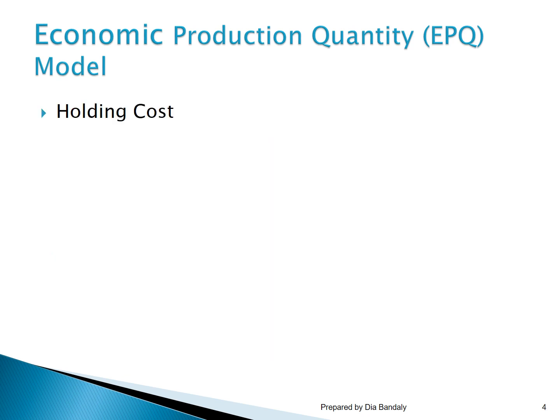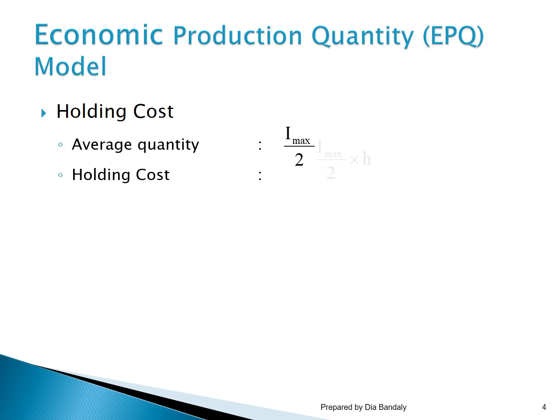The first cost is the holding cost. As in the EOQ model, the holding cost equals the average quantity on hand multiplied by the unit carrying cost, which we represent as small h. In the EOQ model, the average inventory was Q over 2, because Q was the peak of the triangle. Here, the peak of the triangle is I_max, not Q. So the average quantity on hand is I_max over 2, and the annual holding cost equals (I_max / 2) × h. This is why it was so important to understand the inventory profile.